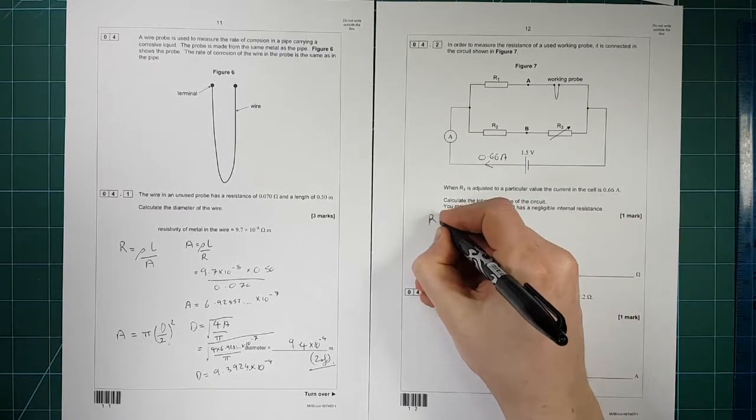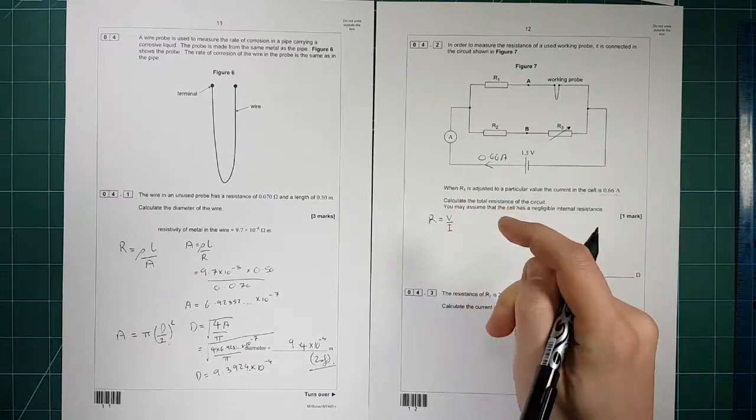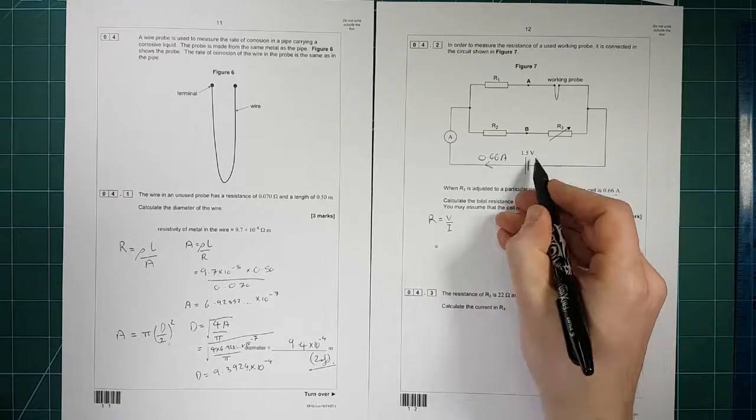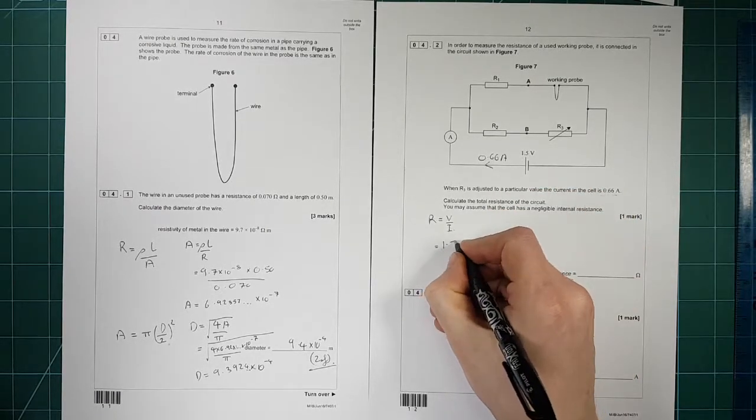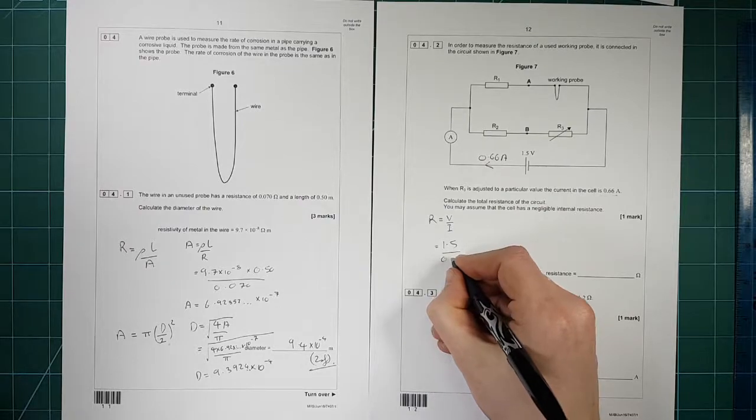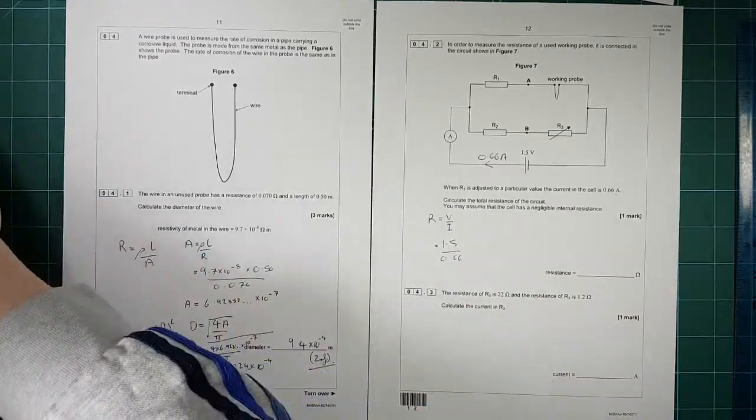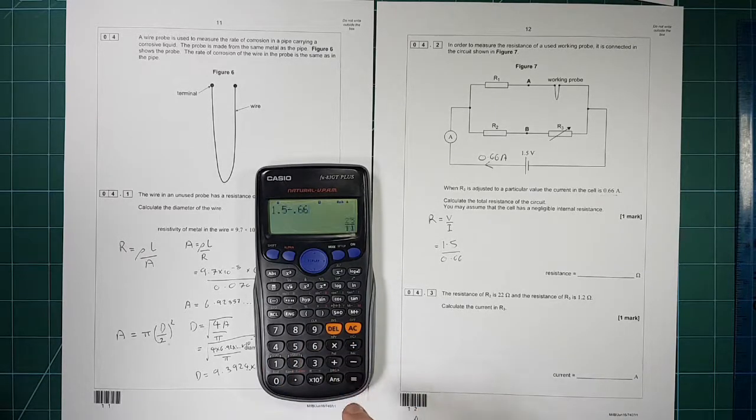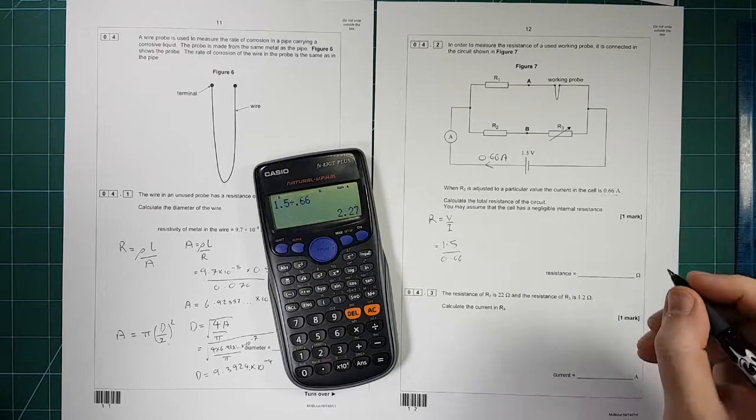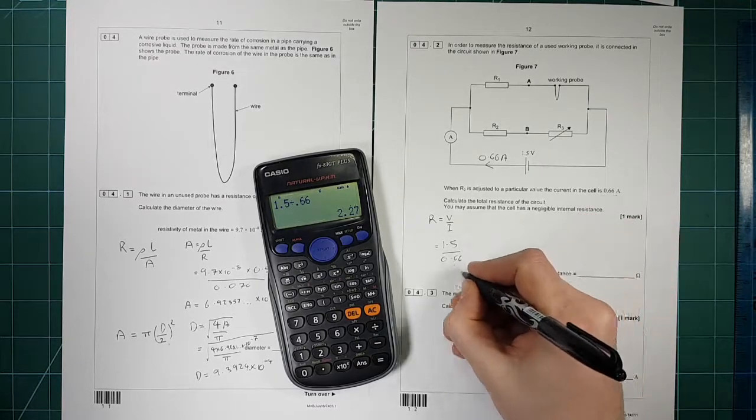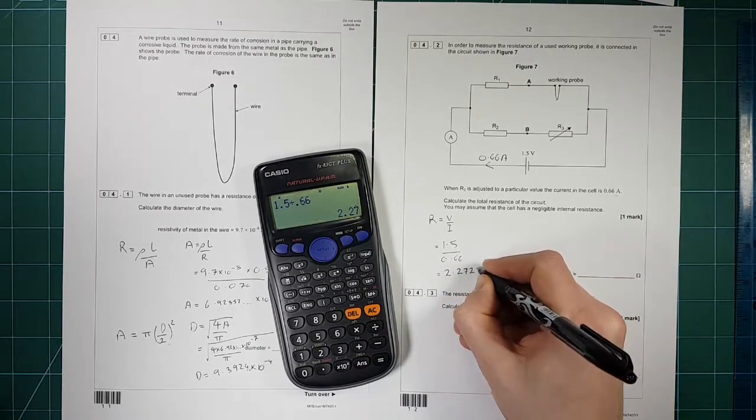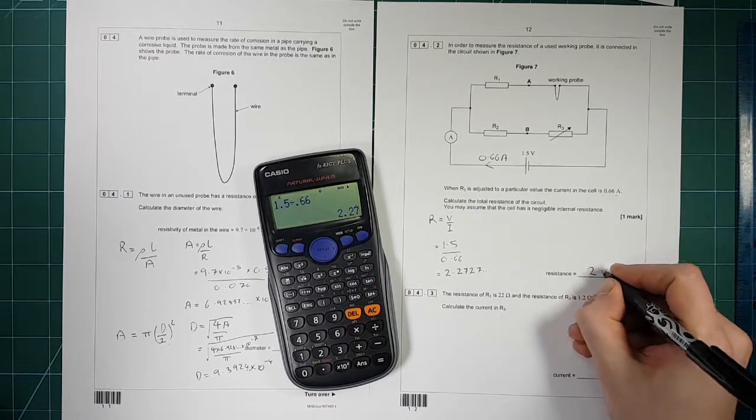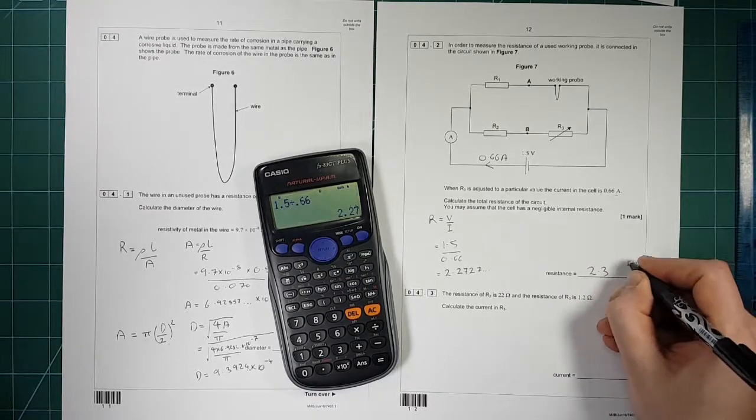We need Ohm's law. R is equal to V over I. We can apply Ohm's law to any individual part, or the whole thing in one go. So let's do it to the whole thing. So the total supply voltage is 1.5 volts, and the current is 0.66. So we do 1.5 divided by 0.66 gives us 2.2727 dot dot dot. So two significant figures will be 2.3 Ohms.